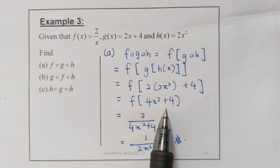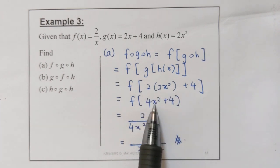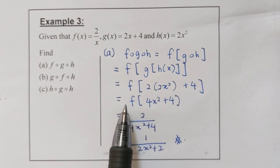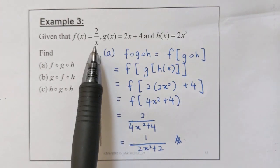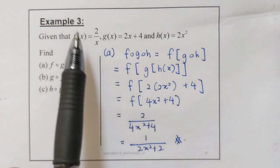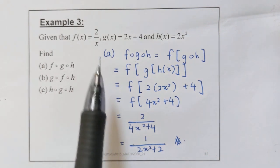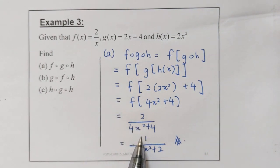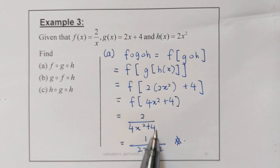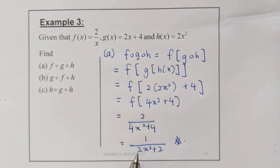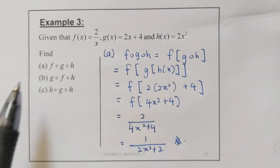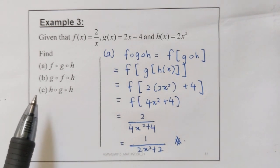Now what you have to do is substitute this into your function f, which is 2 over x. So you substitute into this function and you will get 2 over (4x squared plus 4). You simplify into the simplest form, and it will be 1 over (2x squared plus 2). So b and c are actually the same, and you have to go through those questions on your own.